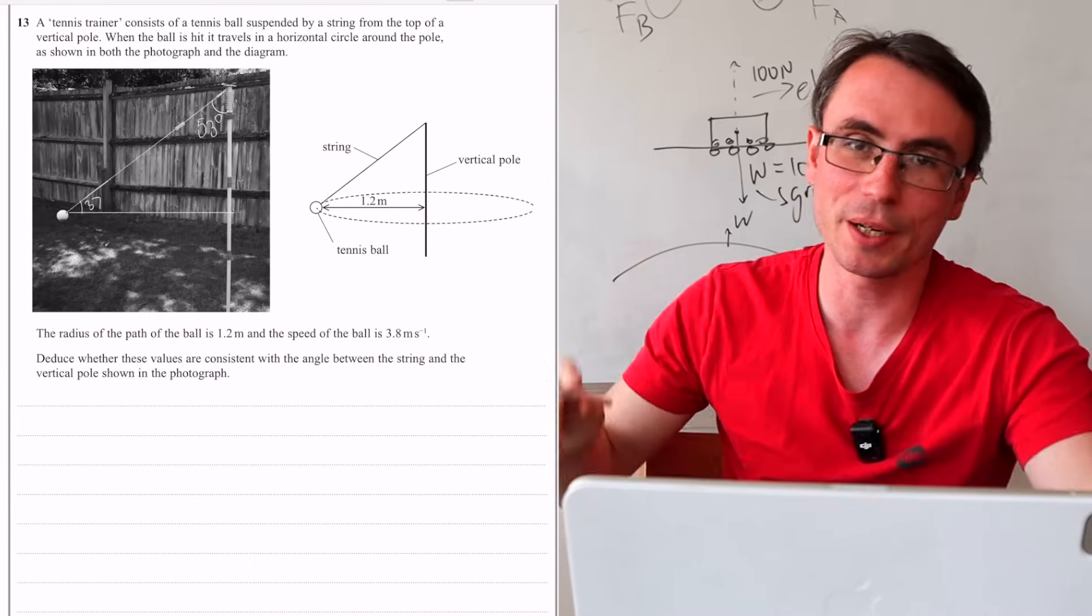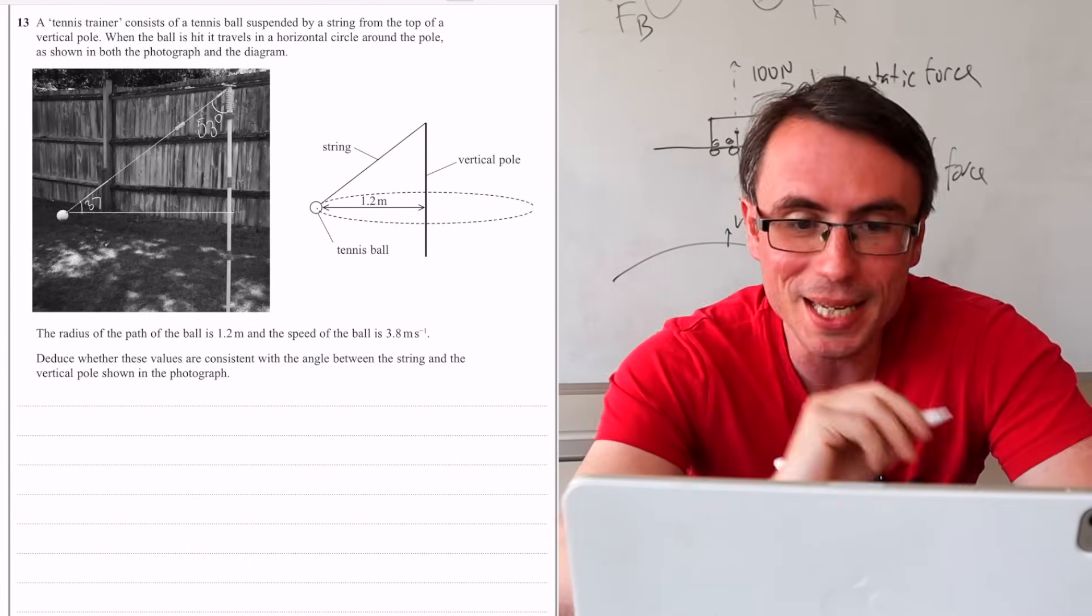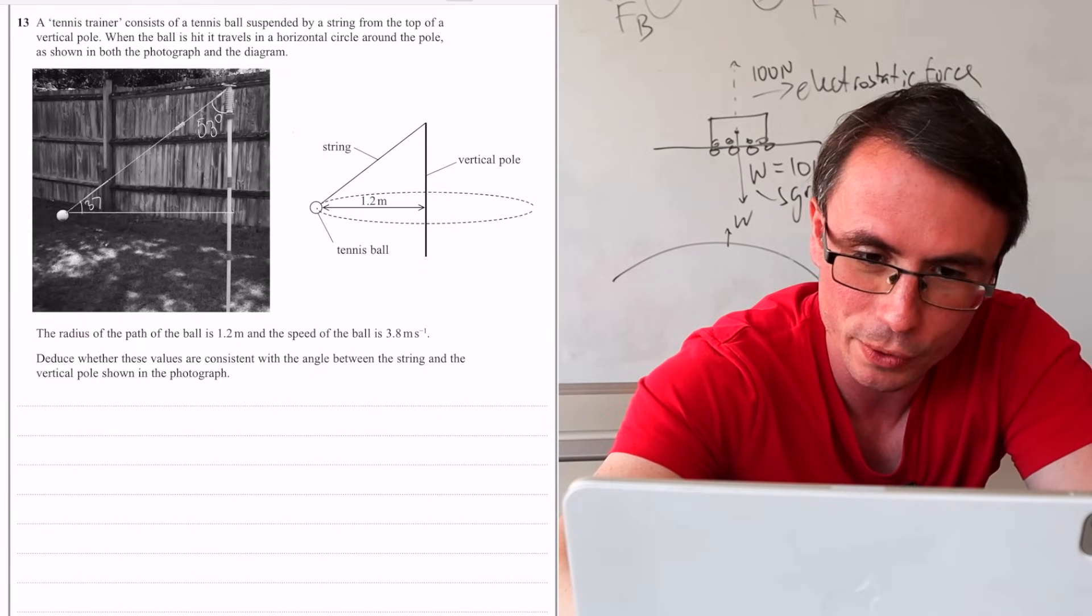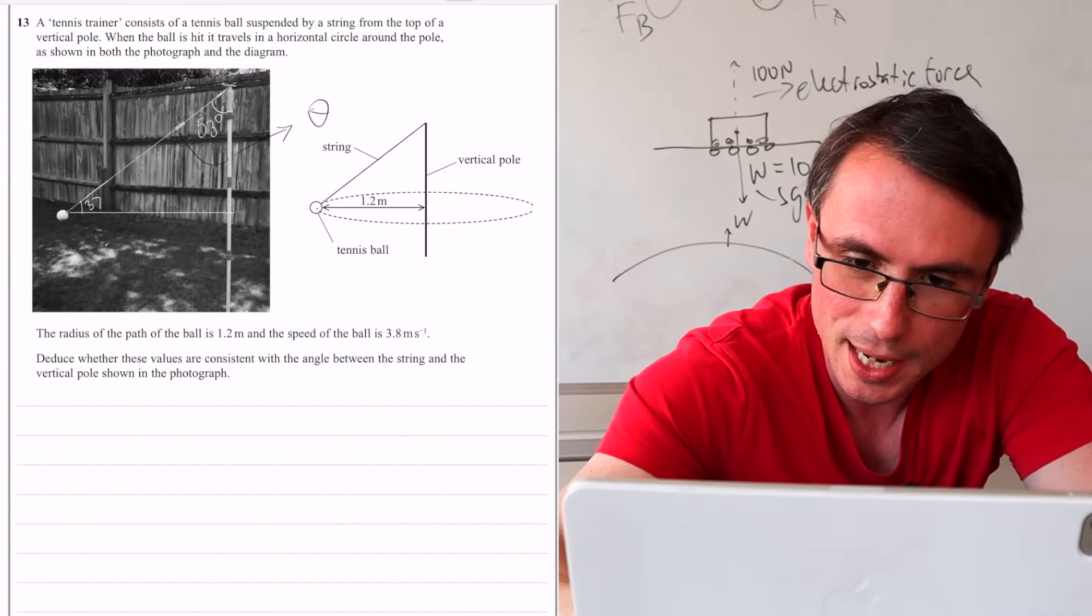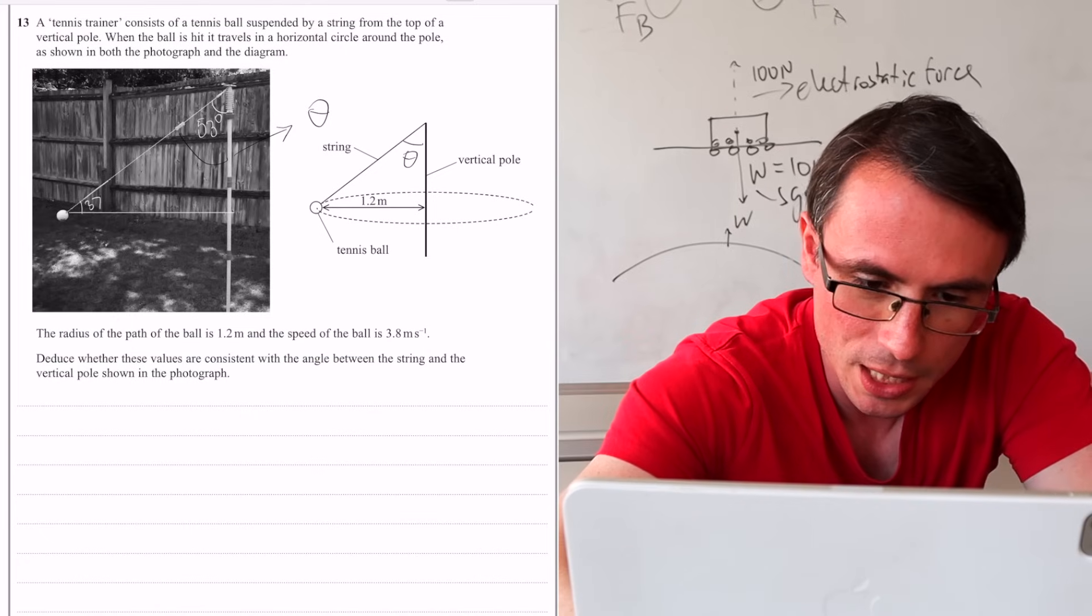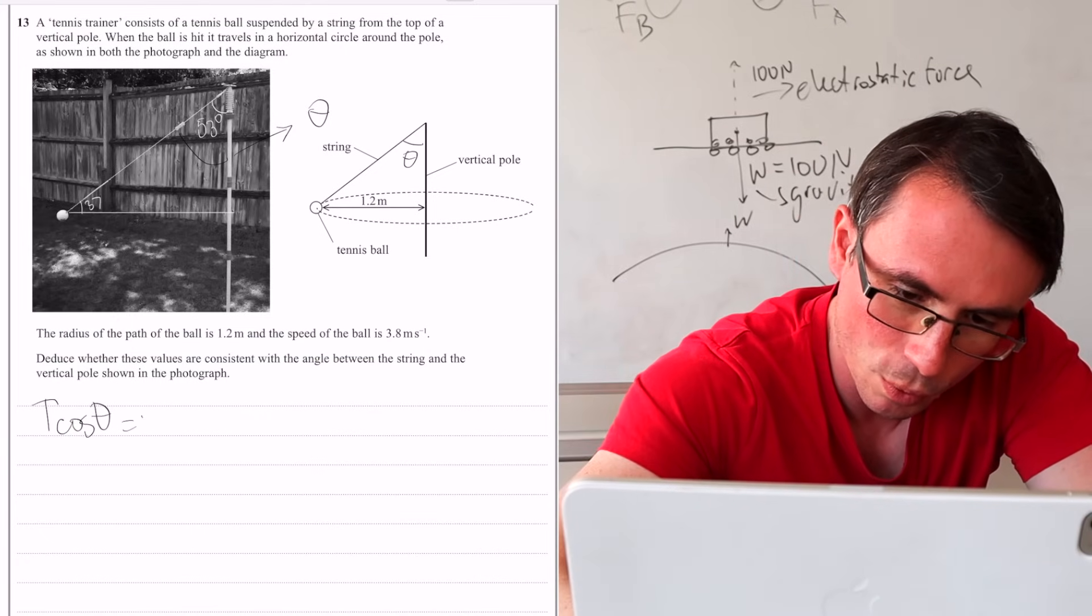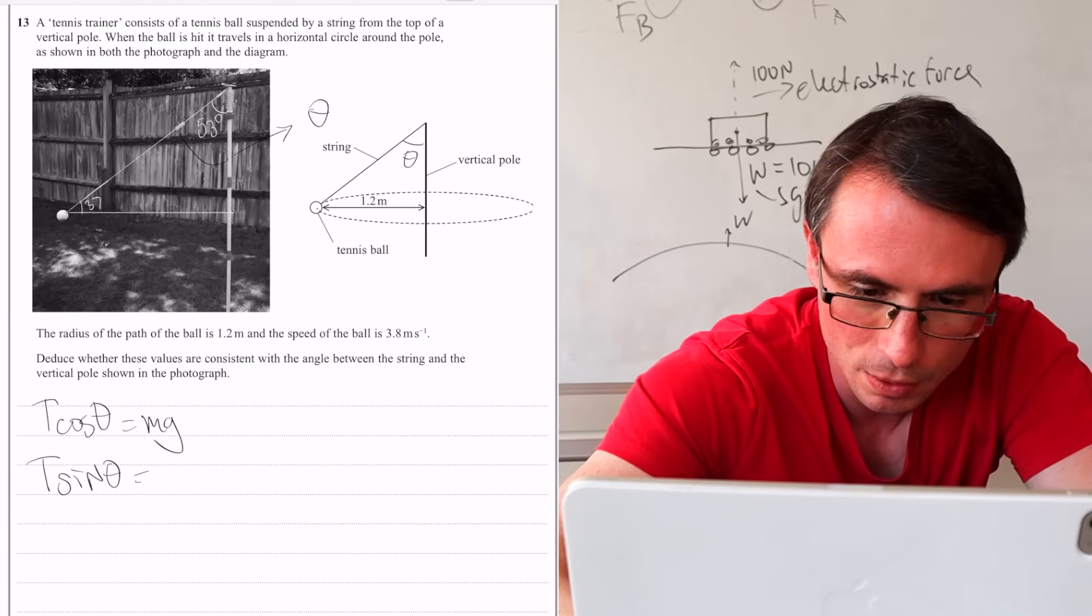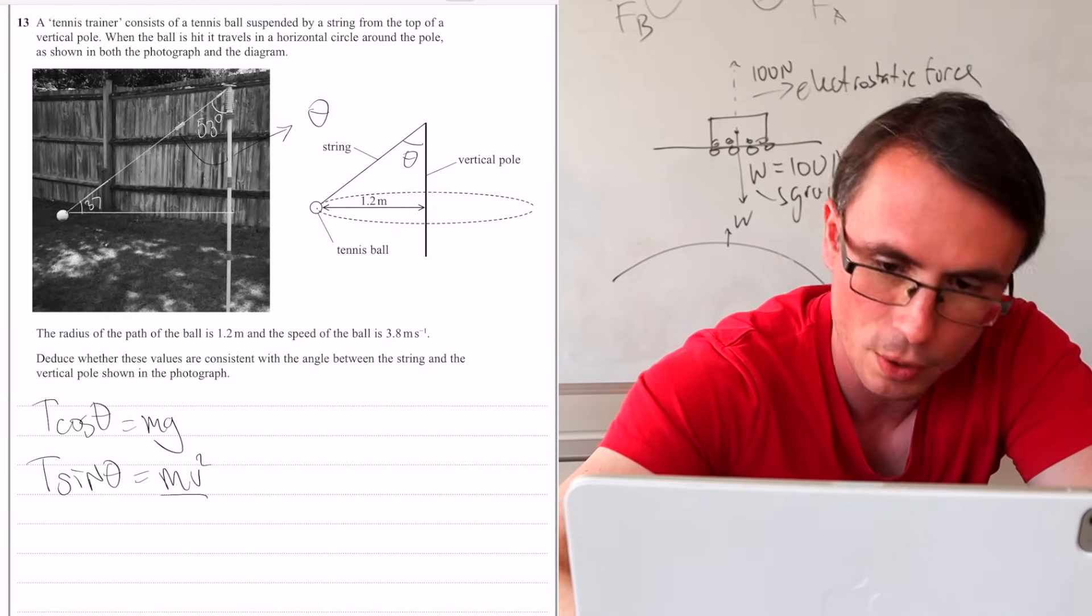Do me a favor, when a problem like that appears, resolve the tension immediately into components. So let's call this angle here also theta. We can say that T cos theta has to be equal to mg, T sin theta is equal to mv squared over r.